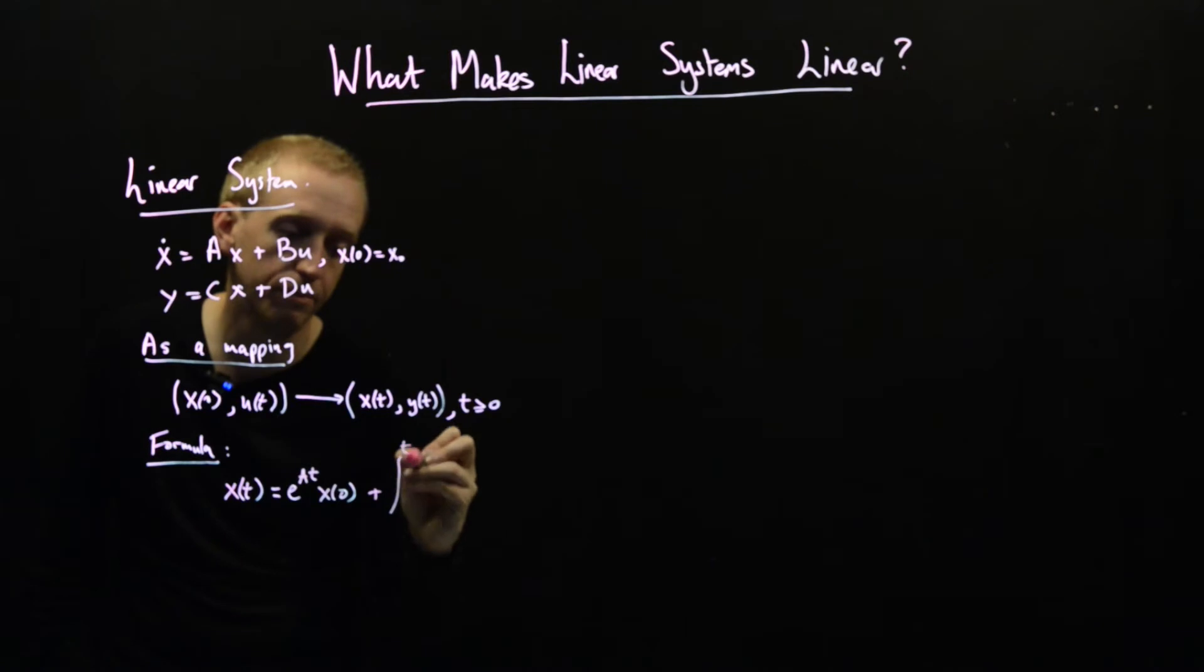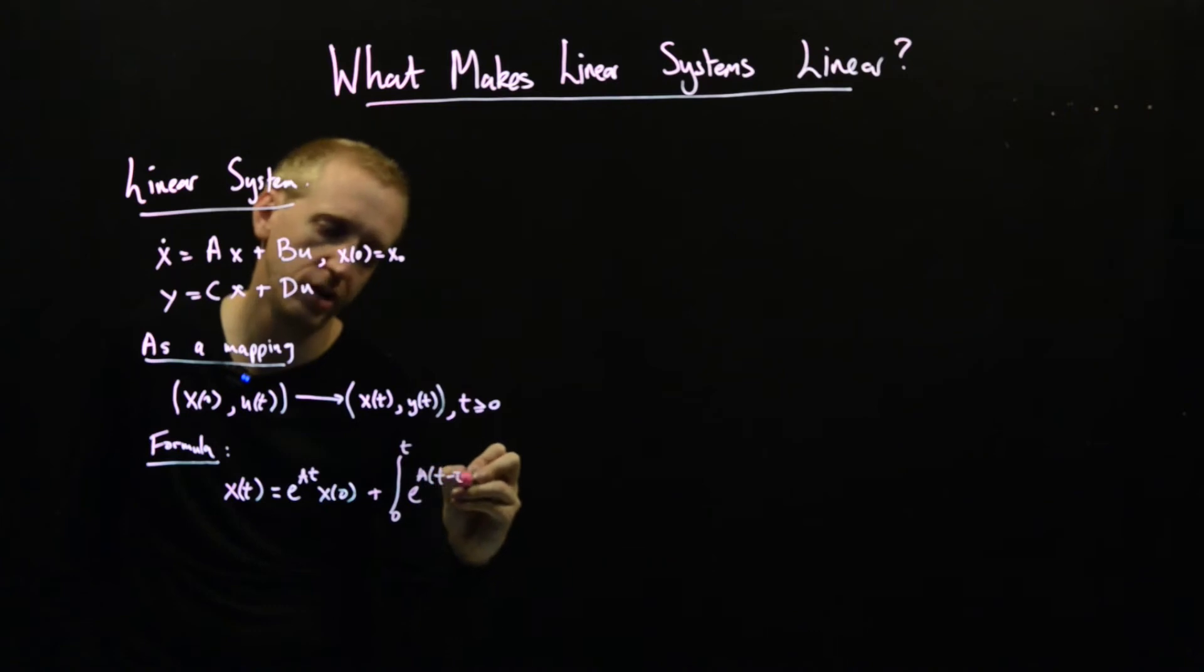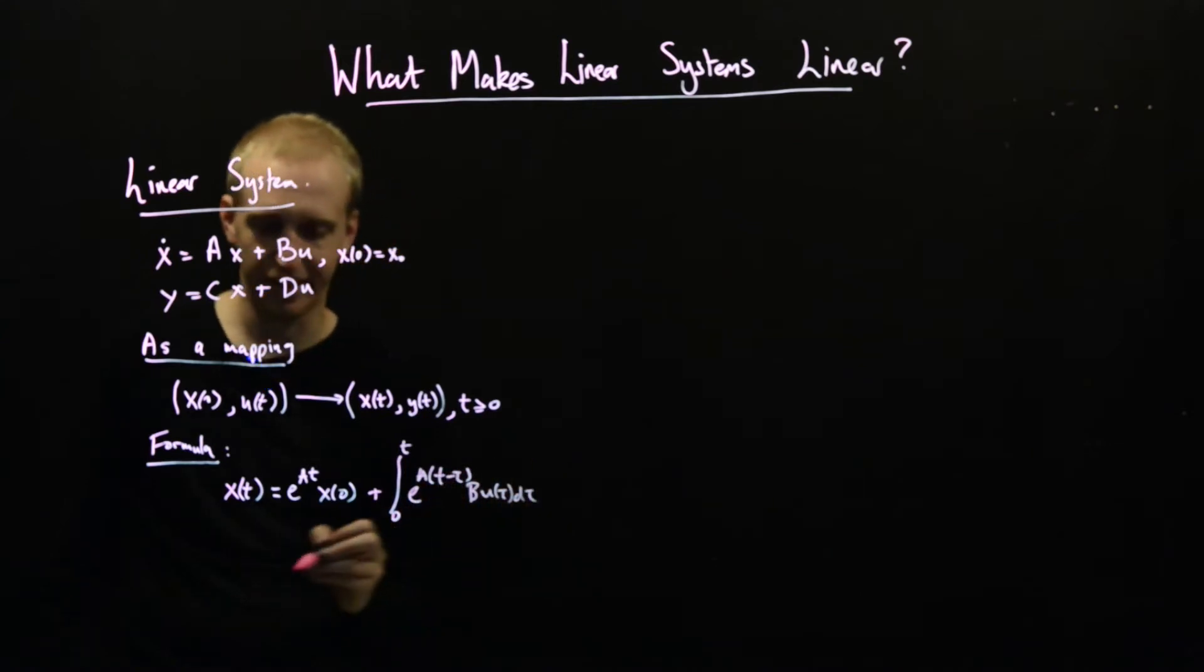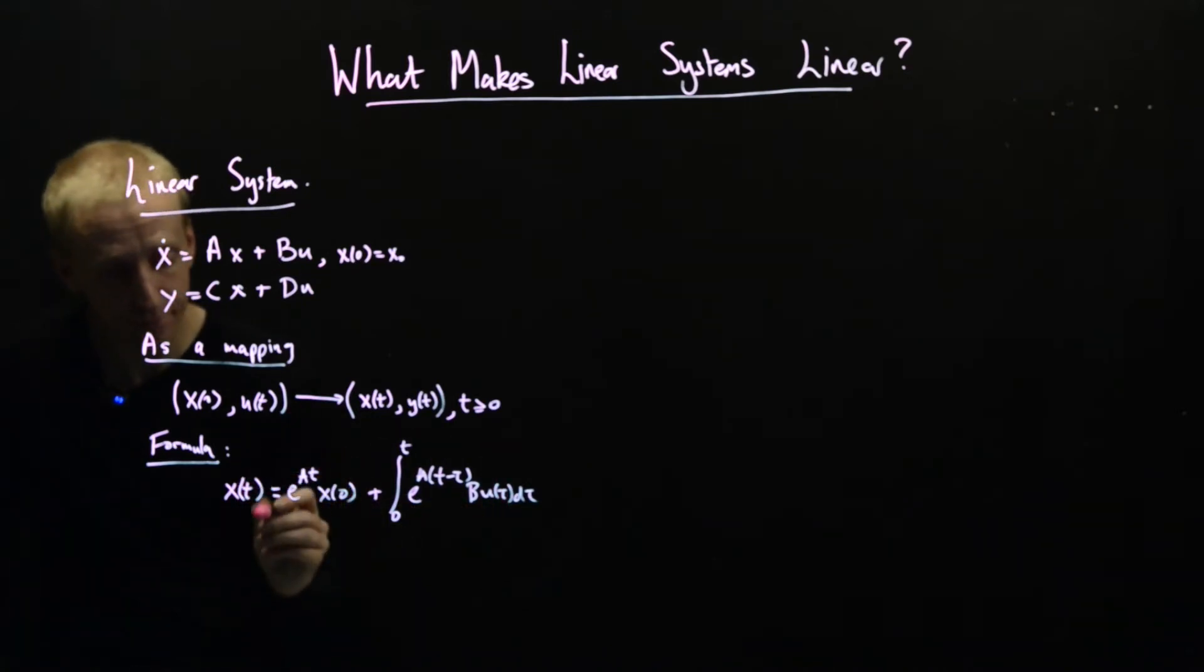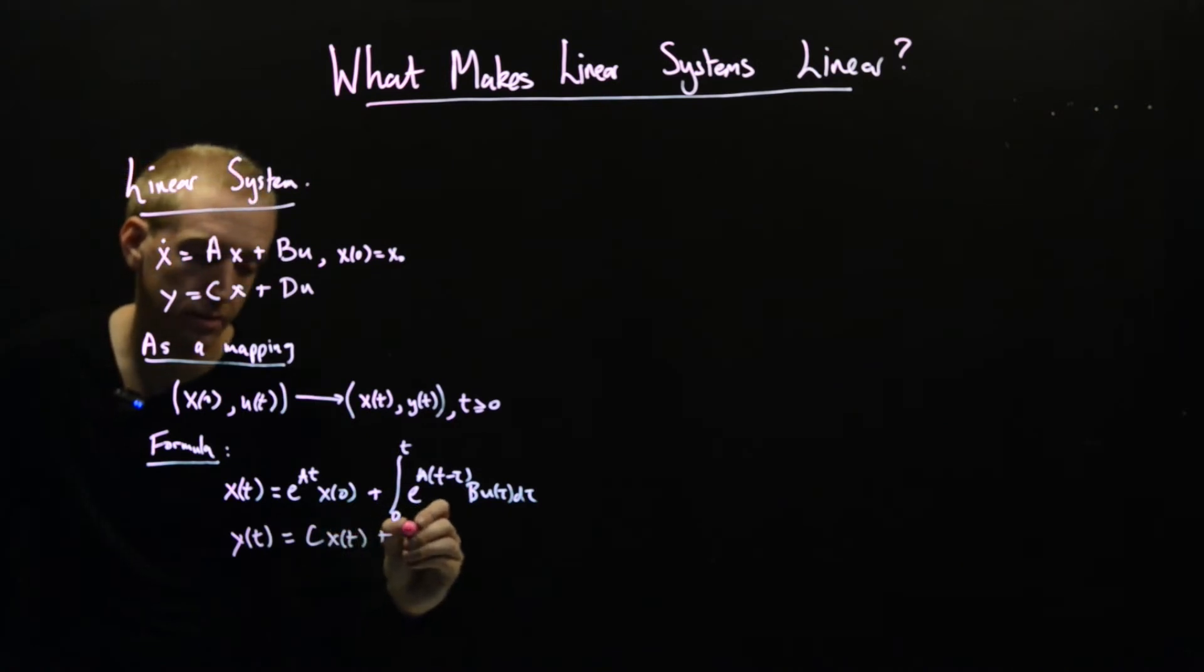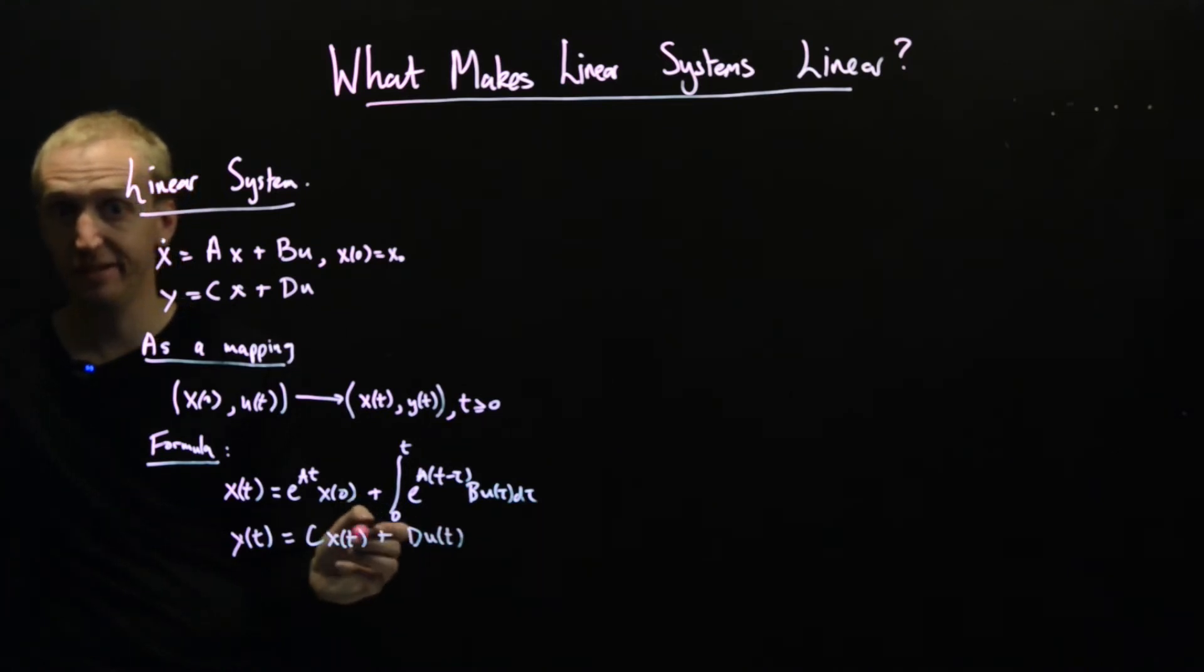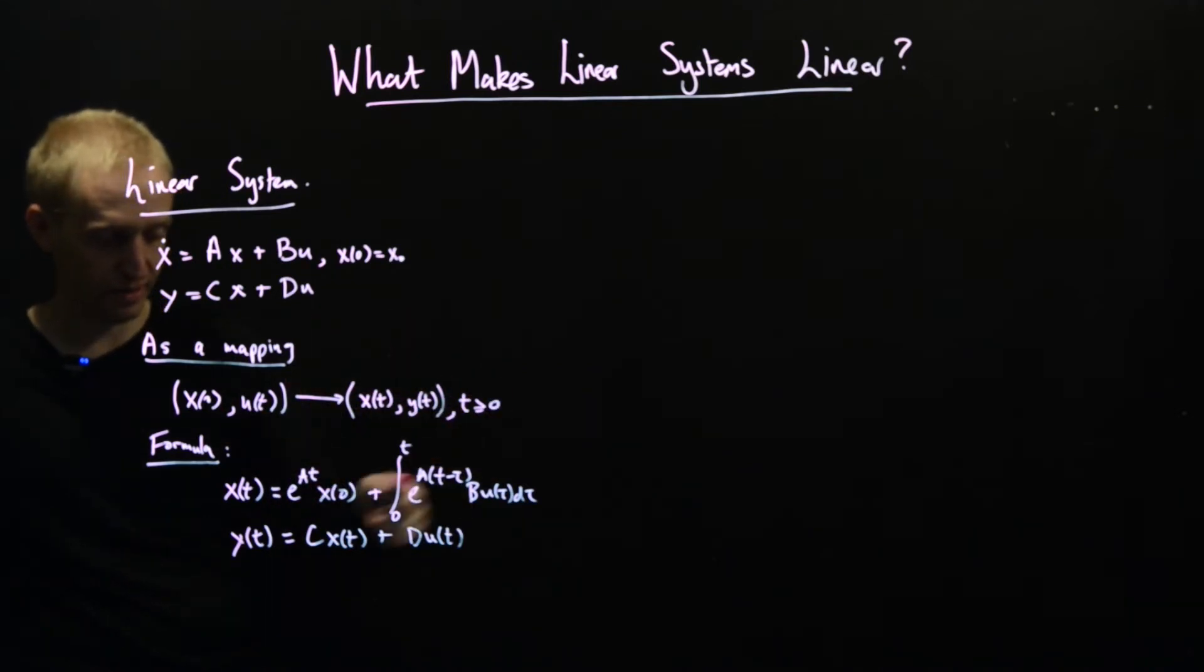And then plus some convolution integral. So this was our formula for telling us what the state is at future times based on the input and the initial condition. And similarly the output was given by exactly the same equation. So given the input and given our solution for the state into future times, we also know what the output is. So we had an explicit formula for this mapping.